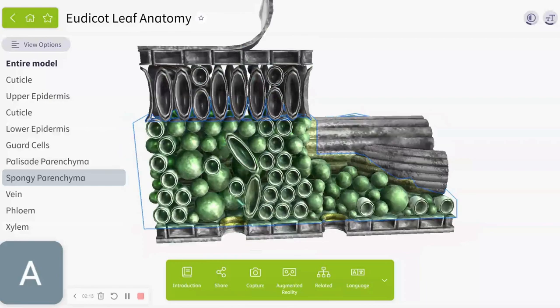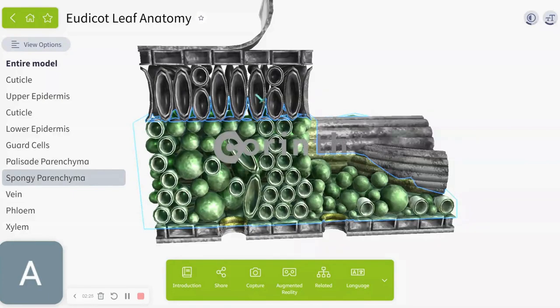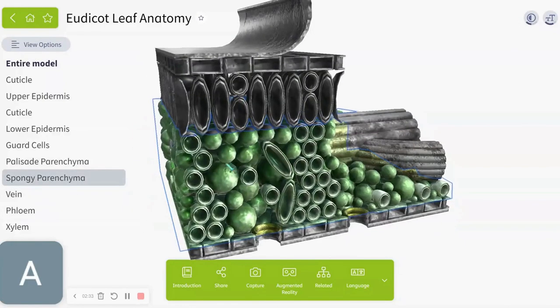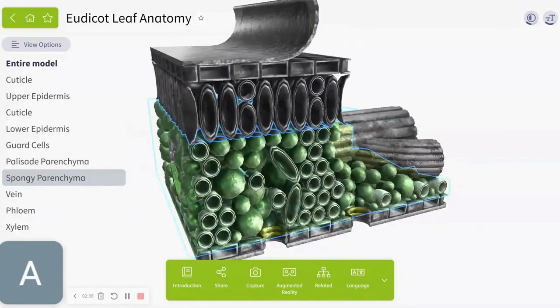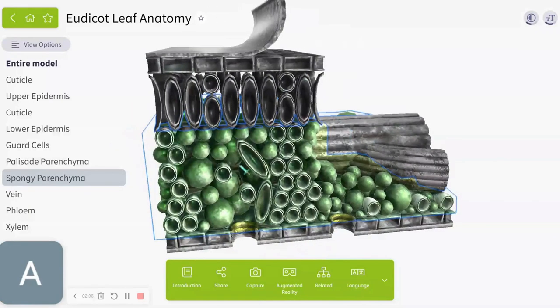Well those are the very holes which the guard cells have to protect. This spongy parenchyma also has a second name, spongy mesophyll. Depends how you say it, but this is called the spongy parenchyma or spongy mesophyll. I'm gonna call it mesophyll.